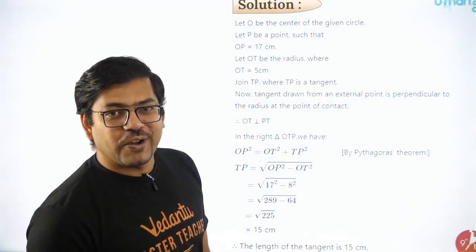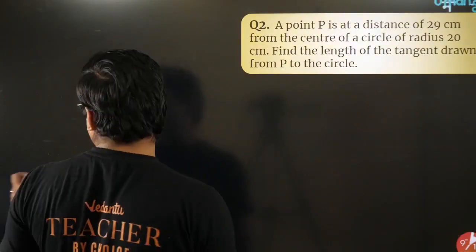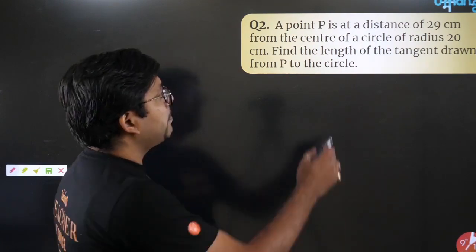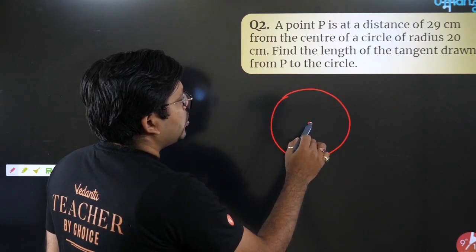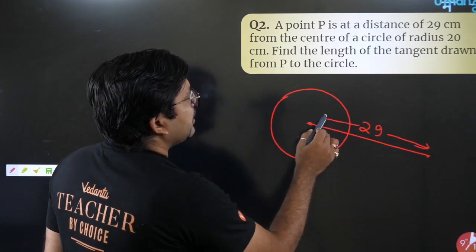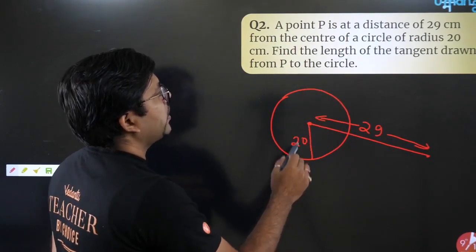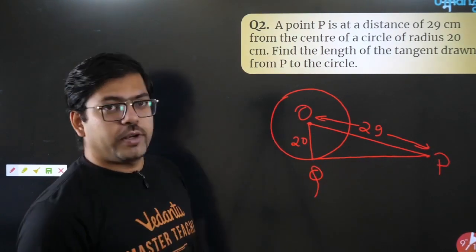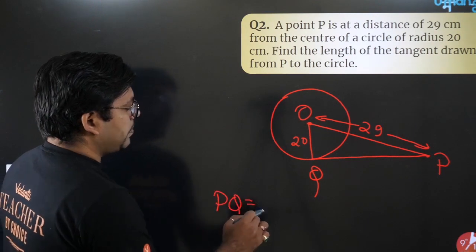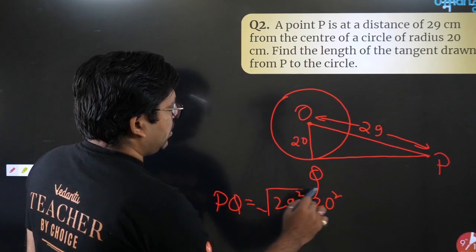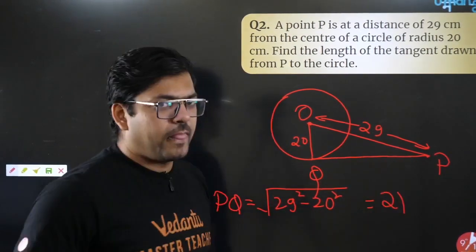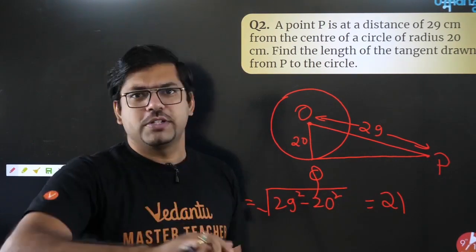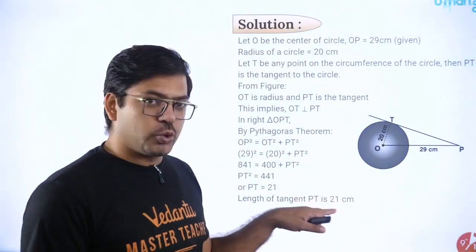Next question: a point P is at a distance of 29 cm from the center of a circle with radius 20 cm. Find the length of the tangent. PQ = √(29² − 20²) = √(841 − 400) = √441 = 21 cm. These one-liner questions are actually asked in examinations.